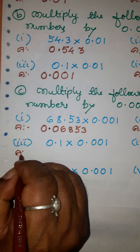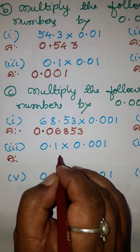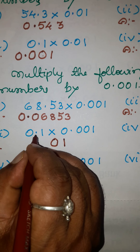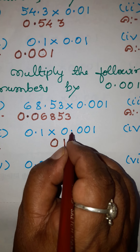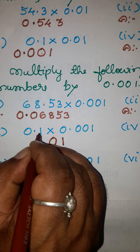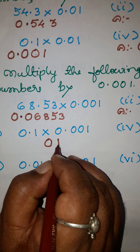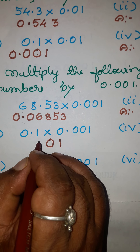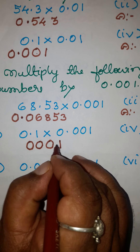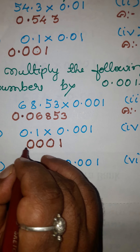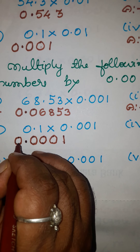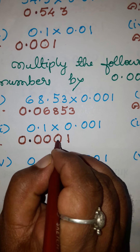Third example: write this number without a decimal point as 01. After the decimal point there is one place; here after the decimal there are three places. Three plus one is four. But here there are only two digits, so make four digits by inserting two zeros. Move four places from right to left — one, two, three, four — put the decimal point, and place a zero here. The answer is 0.001.